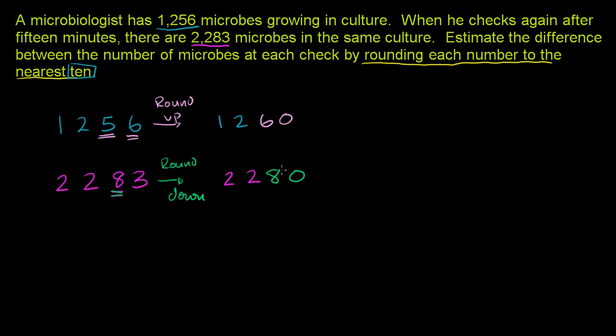Now, they want us to estimate the difference between the number of microbes at each check. We've rounded each number to the nearest 10. Now we have to find the difference. Let's subtract the first check from the second check to get a positive number.